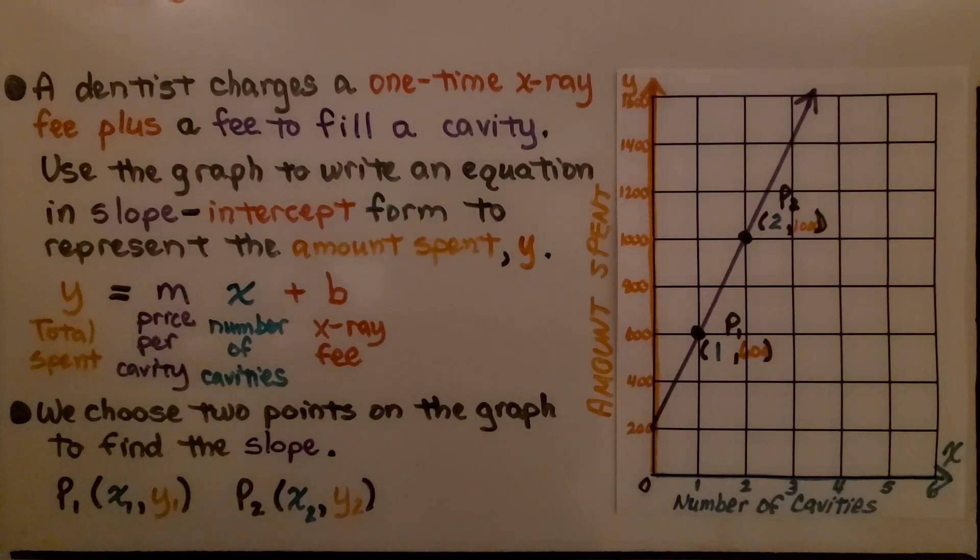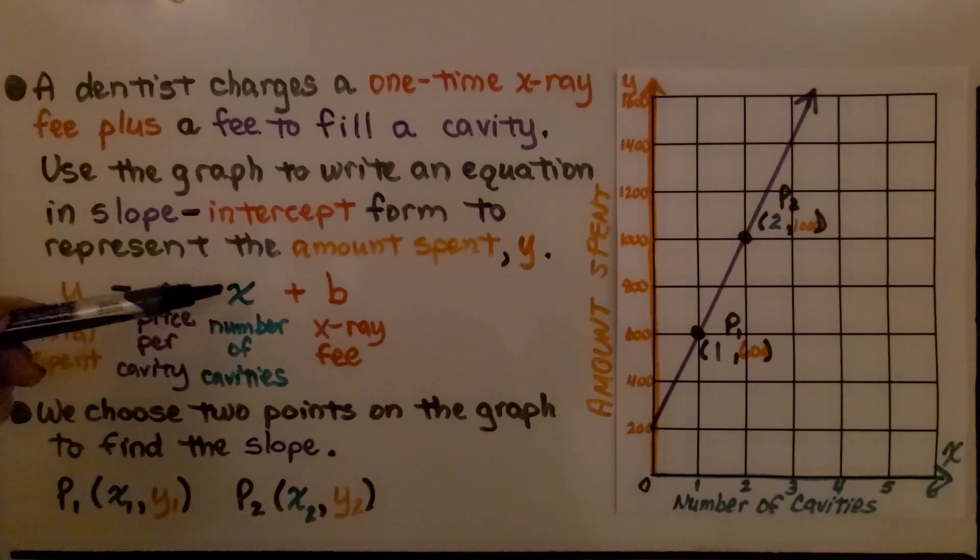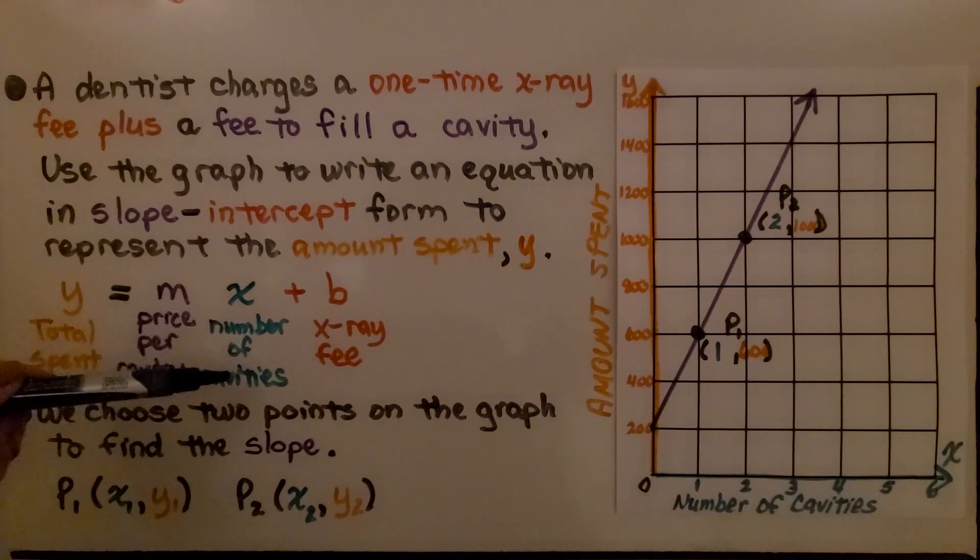A dentist charges a one-time x-ray fee plus a fee to fill a cavity. Use the graph to write an equation in slope-intercept form to represent the amount spent, y. So we have our equation in slope-intercept form. Our y is going to be the total spent, m, the slope, is the price per cavity, x is the number of cavities that are fixed, and b is that x-ray fee.